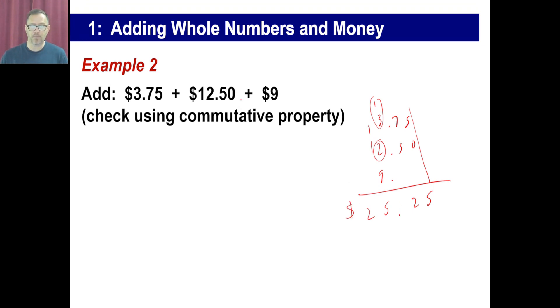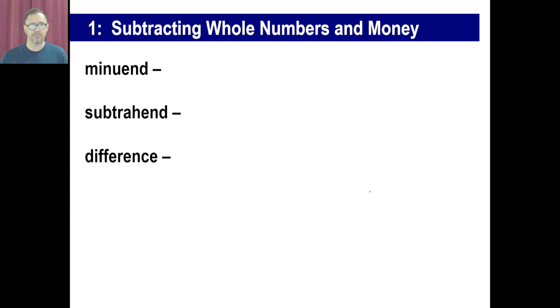Now, check using the commutative property. I won't bother to do this, but just, you know, whatever order that you want to add these in, put the 9 up top, put the $12.50 down here, put the $3.75 here or there. It doesn't matter. Check it that way. It should work if you want to do that.